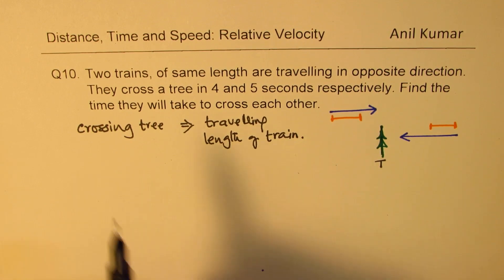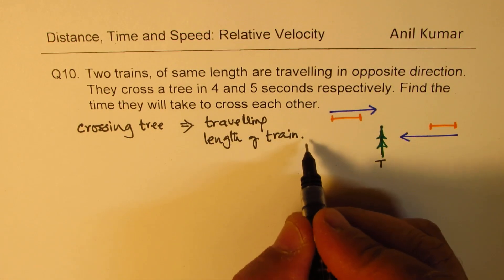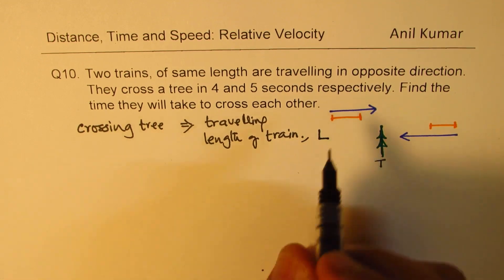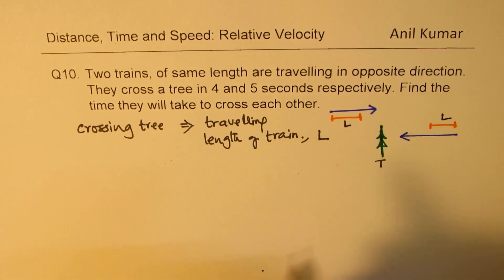So let us say there are two trains of same length. So let the length be L. So both the trains have length L.